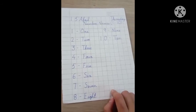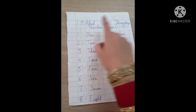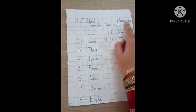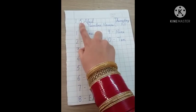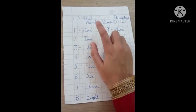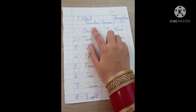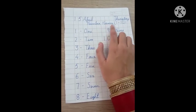Now, let's repeat what we have done today. 15 April, Thursday, number names 1 to 10. Date on the left side, day on the right side and in between heading. N-U-M-B-E-R number, N-A-M-E-S names 1 to 10. Number names 1 to 10.